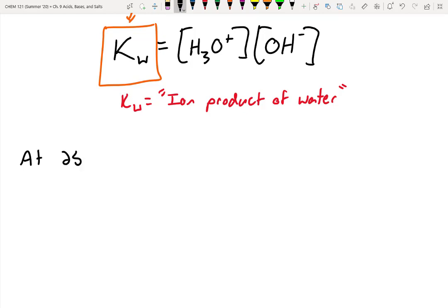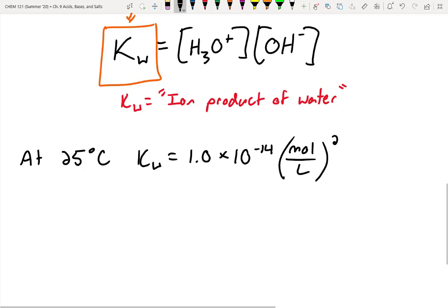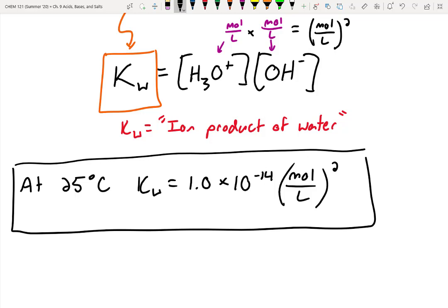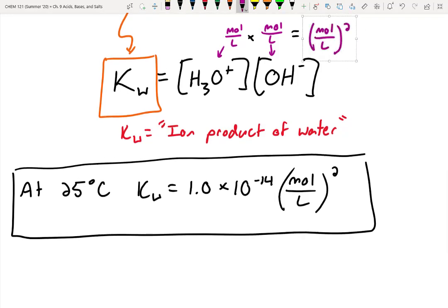So anytime you've got pure water, self ionizing, KW will be a set value. In fact, we know what that value is experimentally. So at 25 degrees Celsius, KW is going to be equal to 1.0 times 10 to the negative 14 moles per liter squared. And you might be wondering, why in the heck are you writing moles per liter squared? We've never seen that unit. Well, it kind of makes sense, because if we think about the units here, it'd be moles per liter. And then we're going to multiply it by another unit where the concentration is in moles per liter. And when all is said and done, this is going to leave you a unit that is moles per liter squared. But it's always going to be equal to 1.0 times 10 to the negative 14th at 25 degrees Celsius, which is kind of cool. We can use this in a lot of our math problems, which we'll practice a little later.